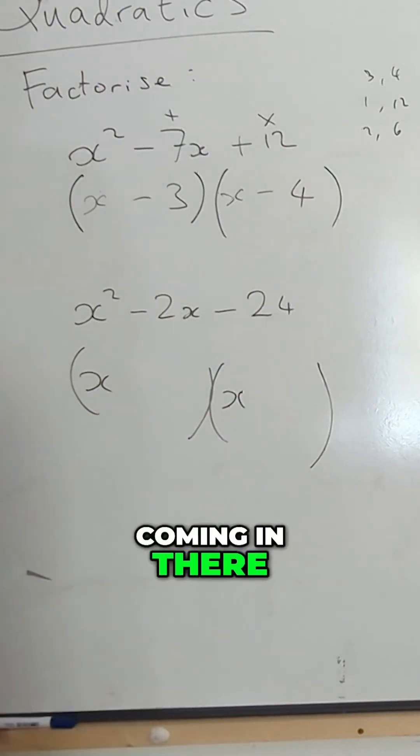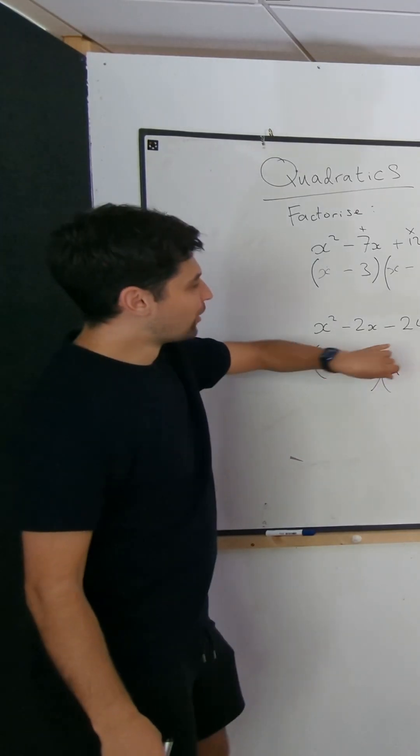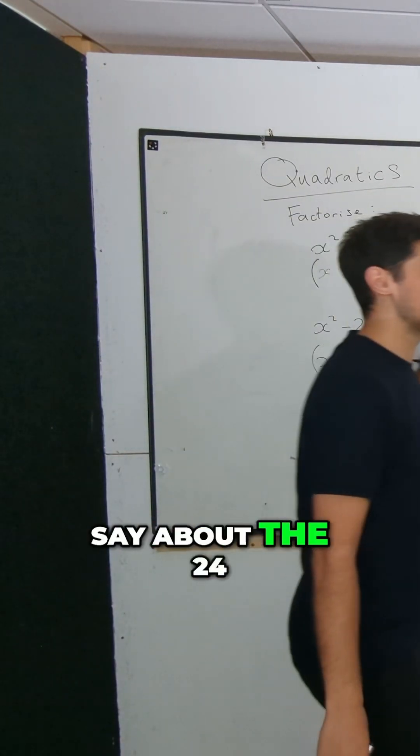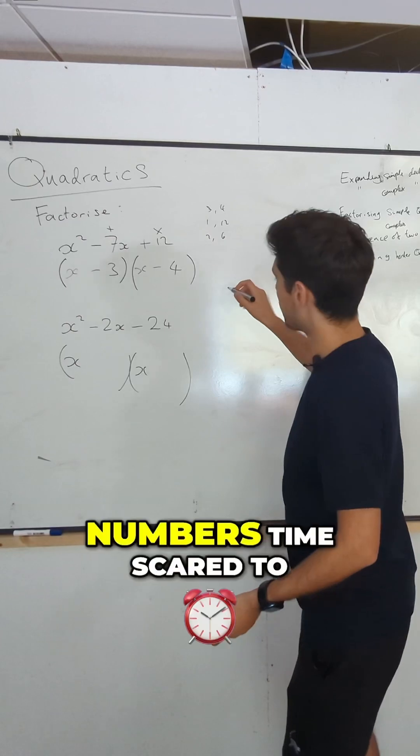The X's are coming in there because X times X is X squared. So, what do we say about the 24? We've got to write out the numbers that make 24 and 2. So what pairs of numbers multiply together to make 24?